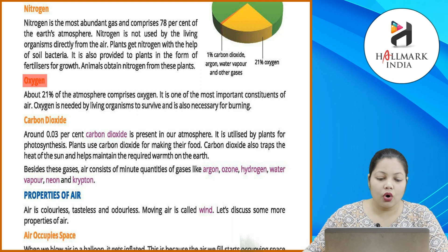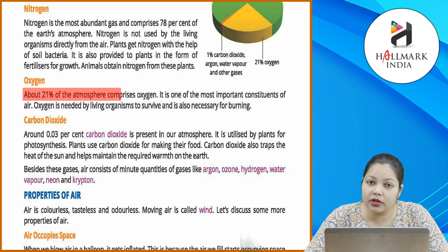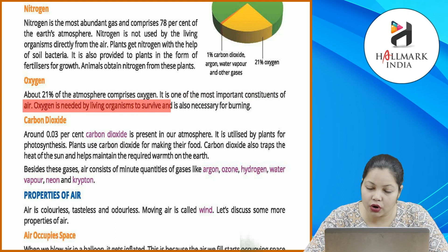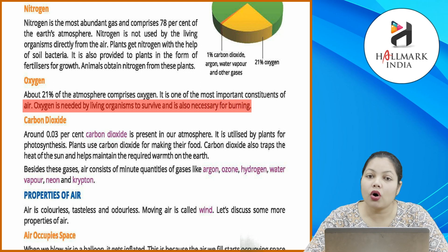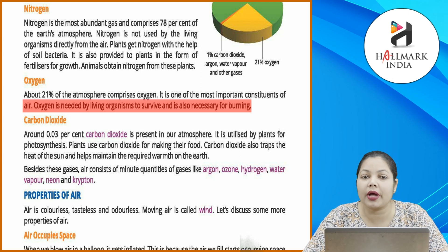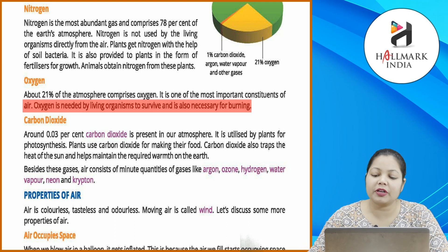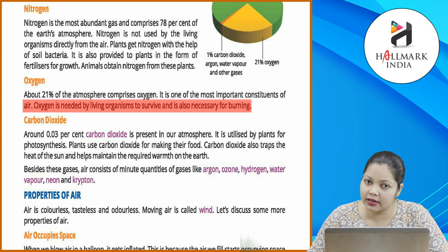Oxygen: about 21% of the atmosphere comprises oxygen. It is one of the most important constituents of air. Oxygen is needed by living organisms to survive and it is necessary for burning. Jaise ke 78% aapka nitrogen hai, to 21% jo hai, atmosphere mein wo oxygen hai. Oxygen human beings ke liye, living beings ke liye bahut zyada zaroori hoti hai zinda rehne ke liye. Aur specially burning ke liye necessary hoti hai.